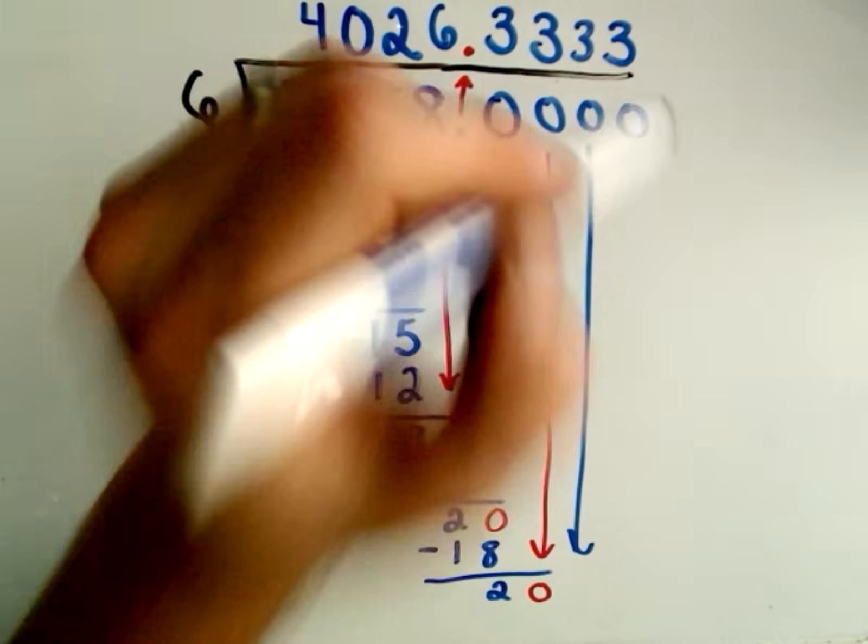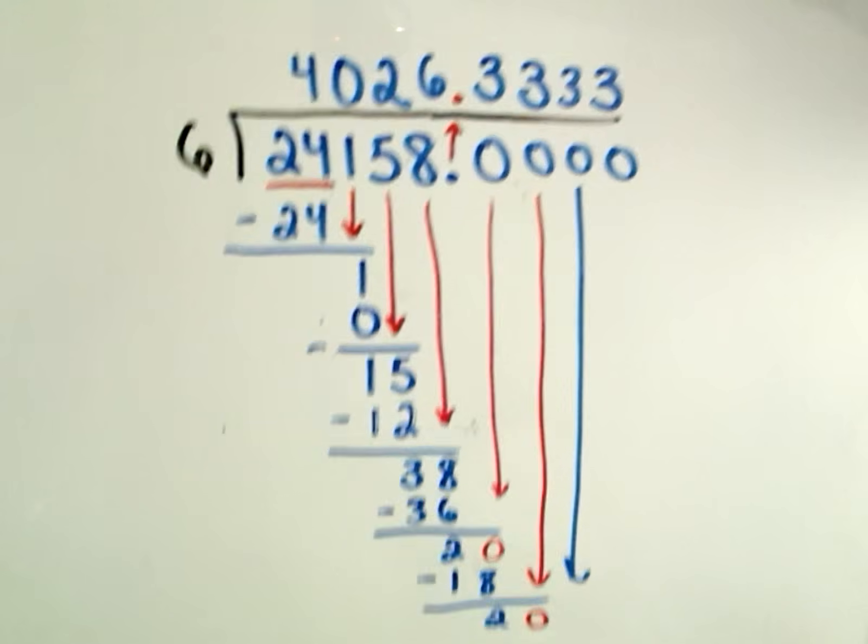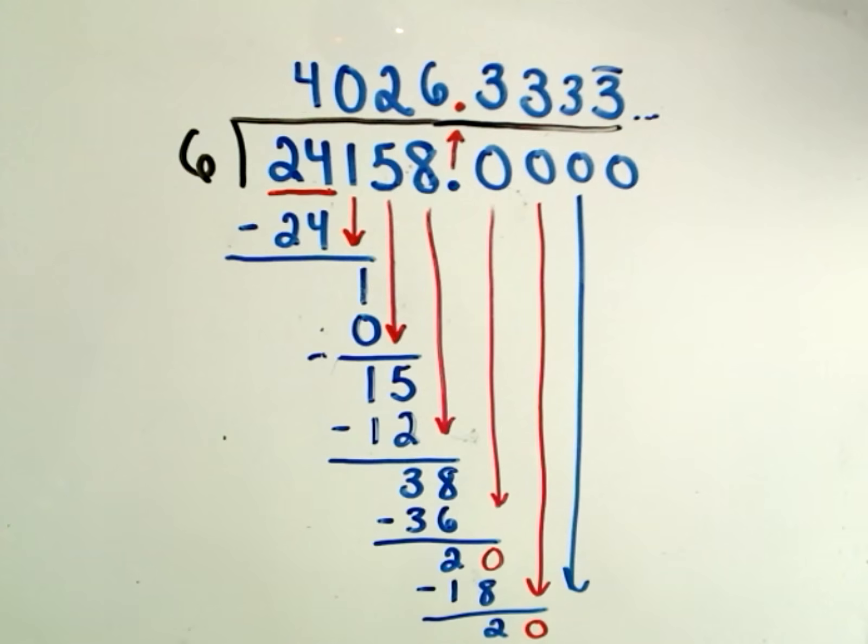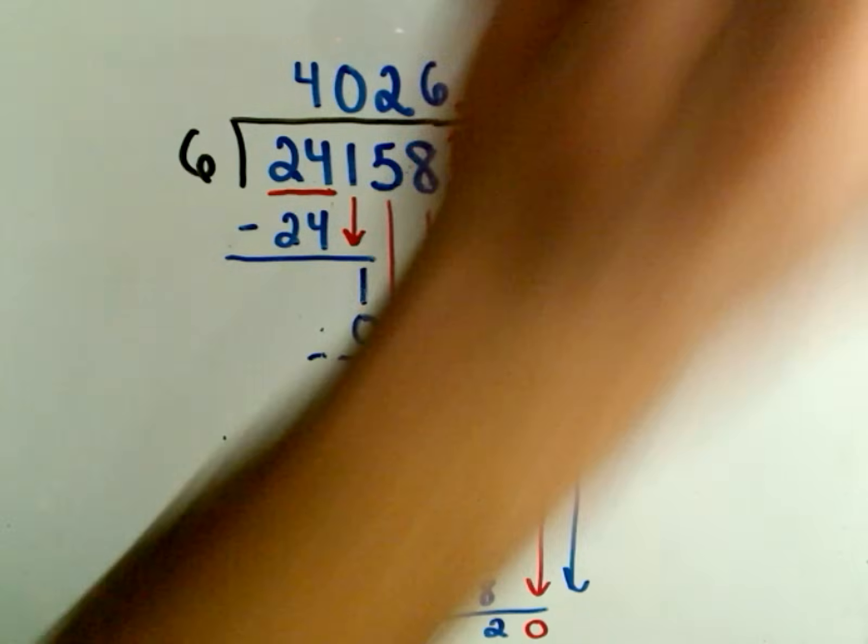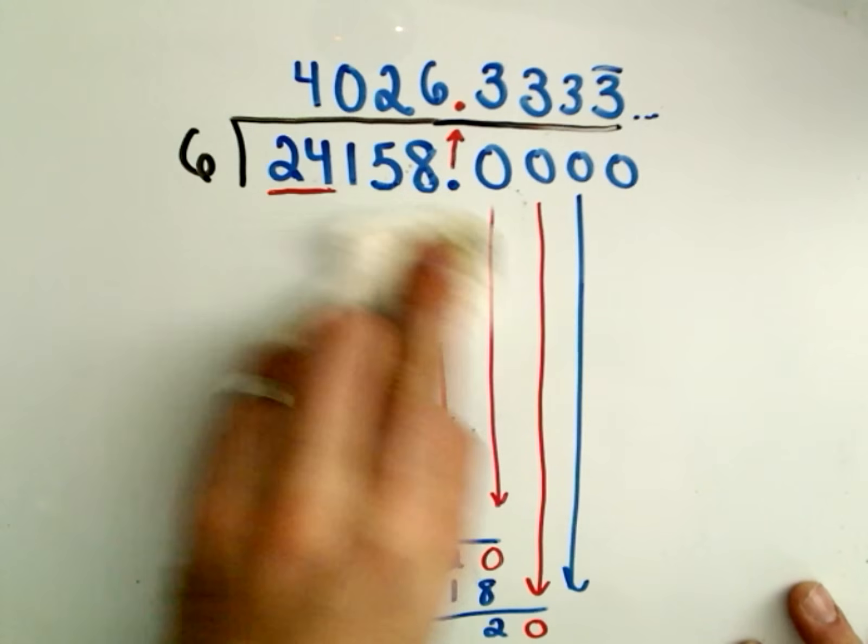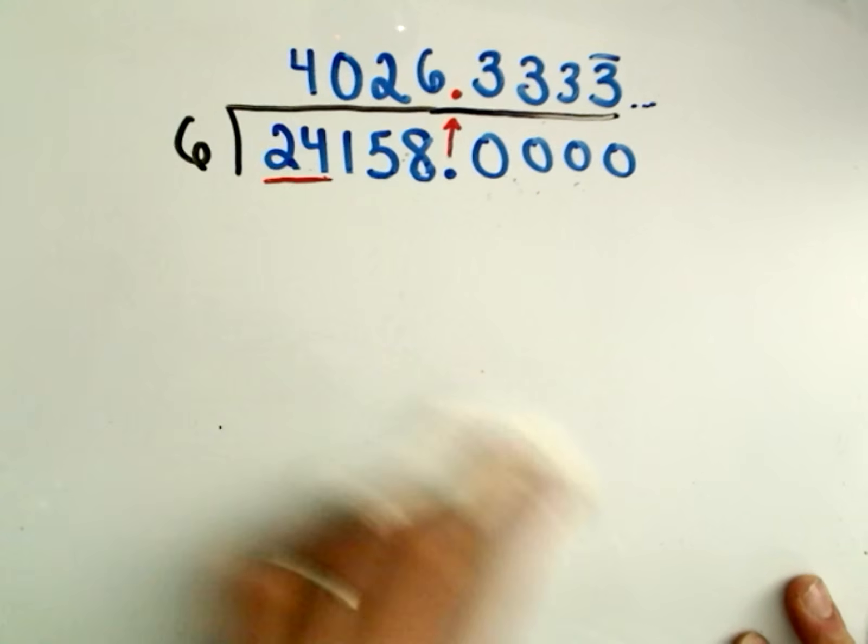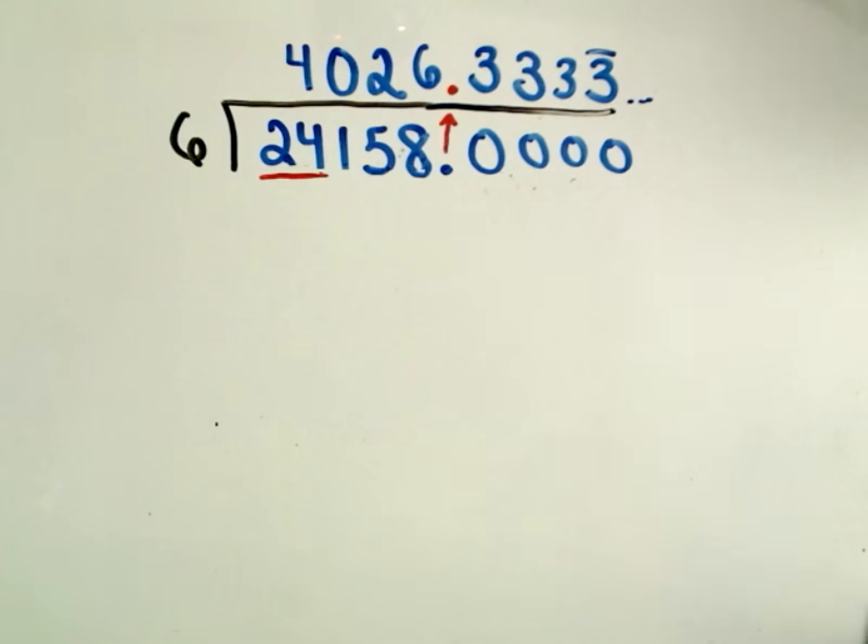Okay, so the way that we write the fact that we keep getting threes forever and ever and ever is we put that little bar over top of it. That bar means whatever numbers are underneath that bar, those sequence of numbers keep repeating forever and ever and ever.